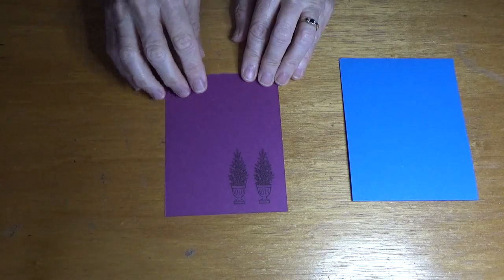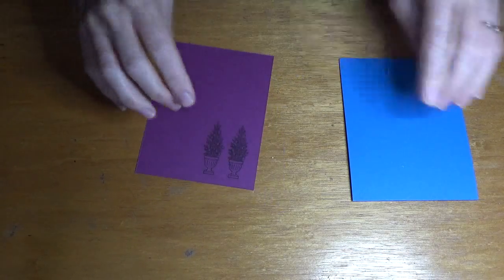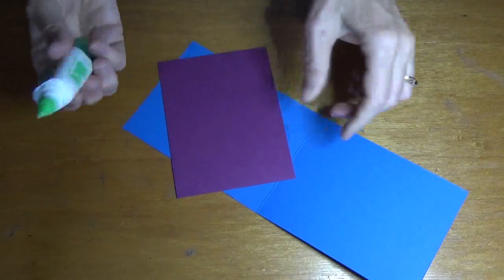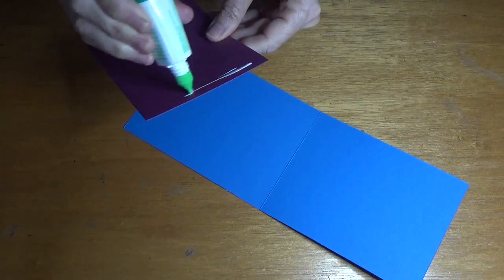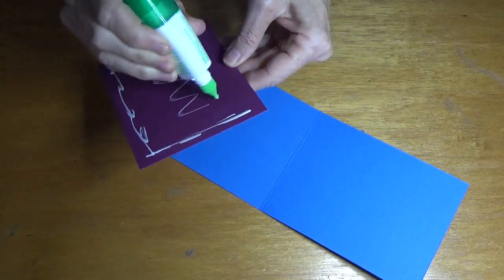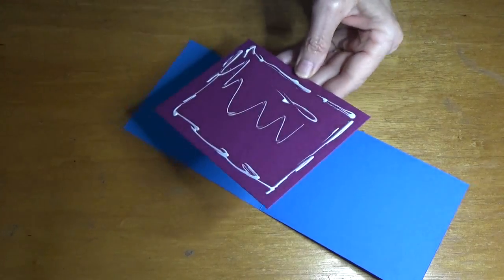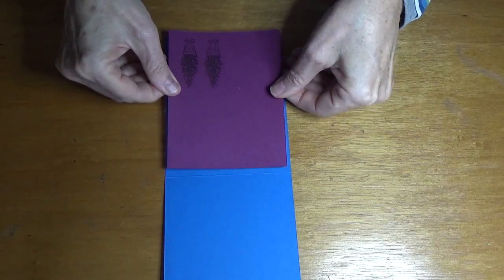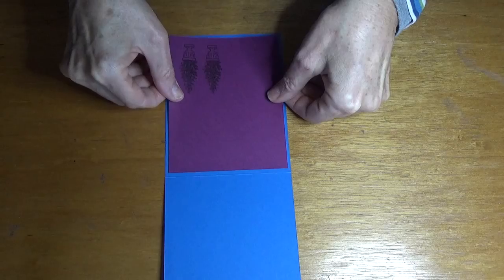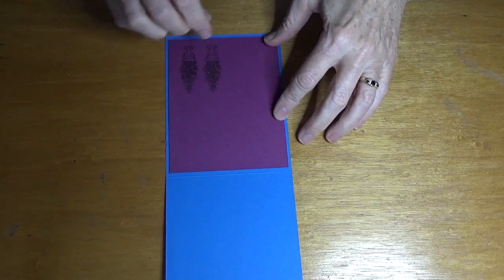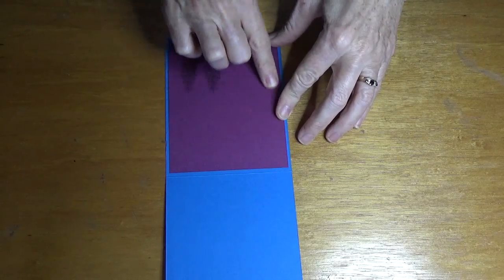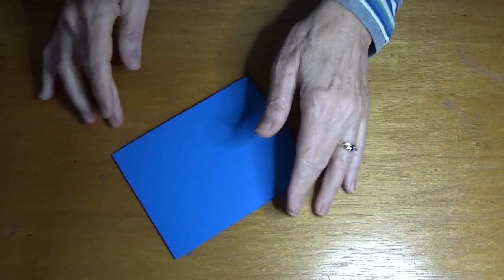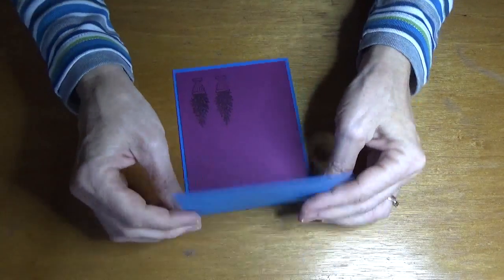I cut a piece of Rich Raspberry to go inside the card and I've just stamped from the At Home With You bundle two of the pot plants. So we'll just pop that in the card first, just using the multi-purpose liquid glue. It's just nice to have something stamped in the inside of the card as well. Just make sure I've got it opening the right way and just popping it down. So that's the inside of the card done.